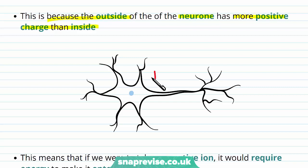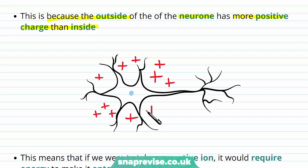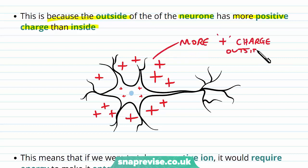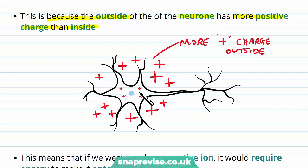Outside of the cell, we see particular ions which are positively charged surrounding the cell. There are more positives outside than inside — there are some inside, but most of them are outside. The cell is dealing with lots of ions because we need these for important processes, and most of the positively charged ions are kept outside. This is why, even though there is some positive charge inside, it's more negative than the outside.